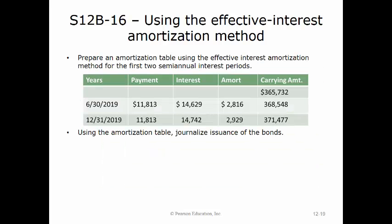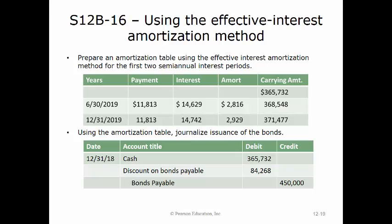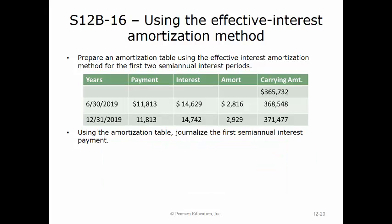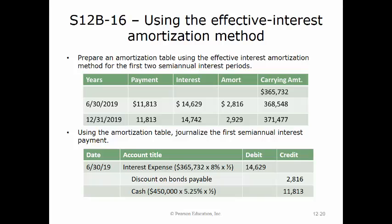To record the issuance, we debit cash for $365,732, debit discount on bonds payable for $84,268, and credit bonds payable for $450,000. For the first semi-annual interest payment on June 30th, 2019, we debit interest expense for $14,629, credit discount on bonds payable for $2,816, and credit cash for $11,813. For the second payment on December 31st, 2019, we debit interest expense for $14,742, credit discount on bonds payable for $2,929, and credit cash for $11,813.